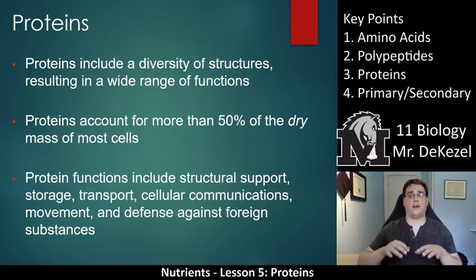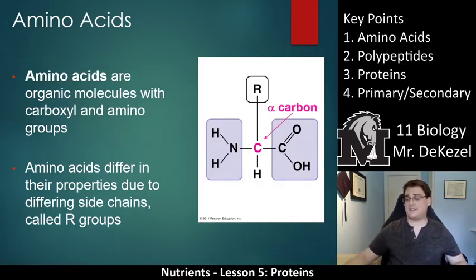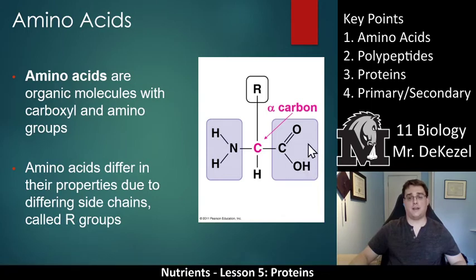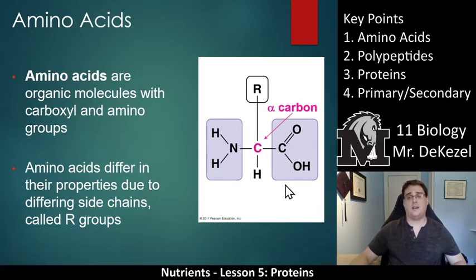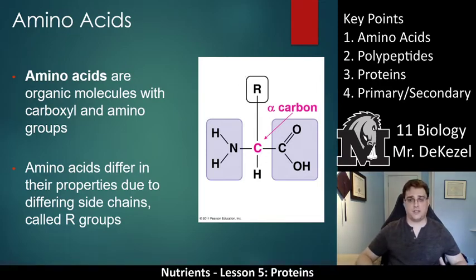Amino acids are the base building block of proteins, and we can break down all of our proteins into amino acids. Amino acids look like this every single time: they have a carbon in the middle, an amino group, and a carboxyl group on the right side, as well as an R group. The R group is what is always different — the amino group, the H, and the carboxyl group are always the same, and the R group changes. There are about 20 different possibilities for R. So amino acids are organic molecules with carboxyl and amino groups on each side, differing in their properties due to differing side chains called R groups.